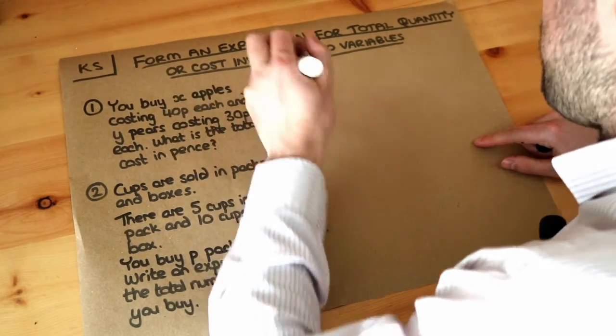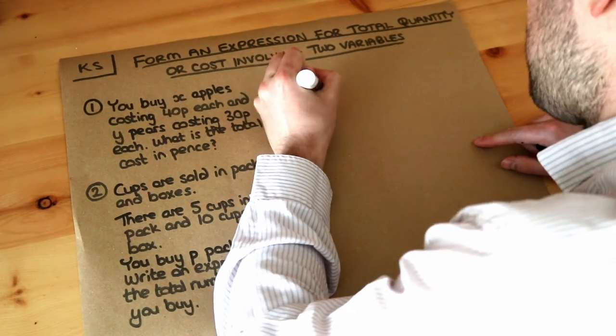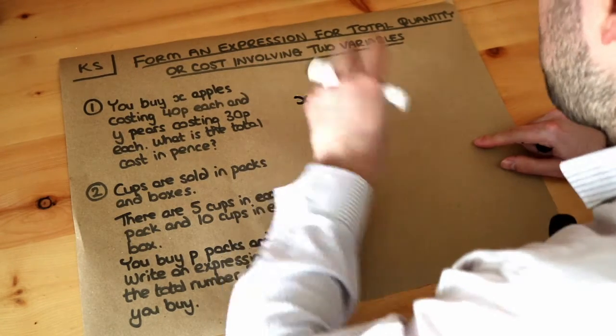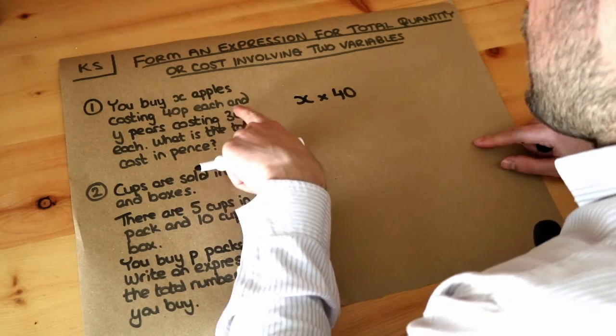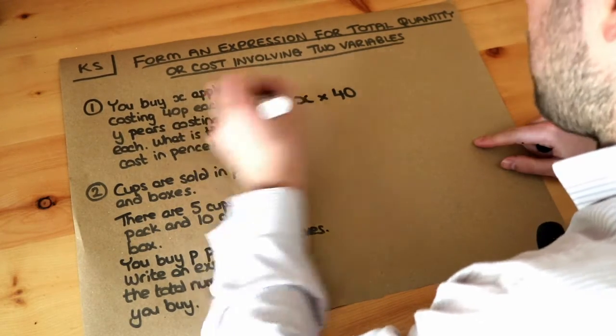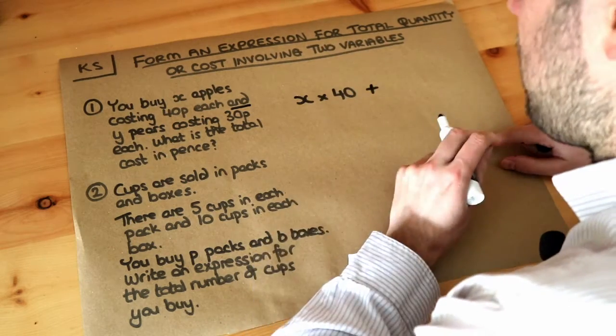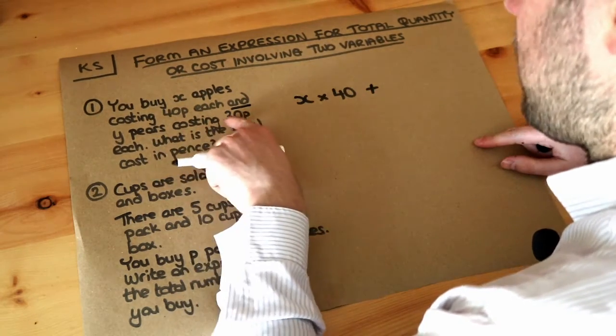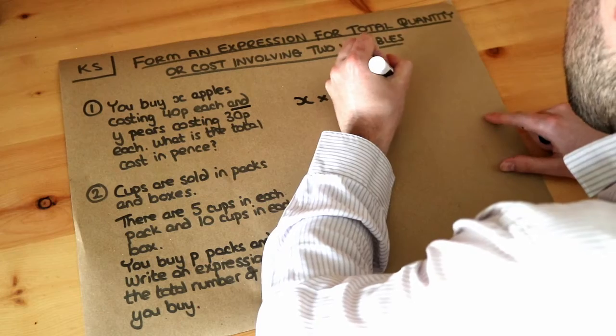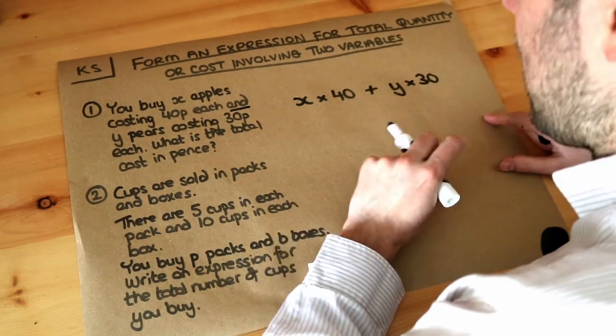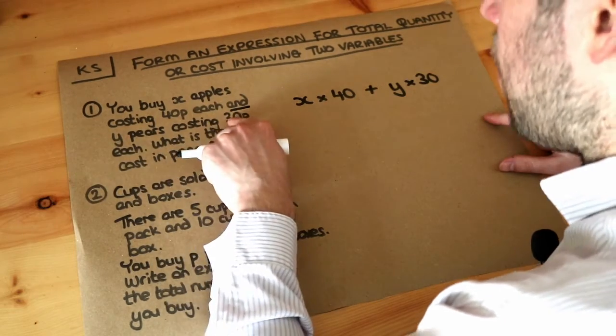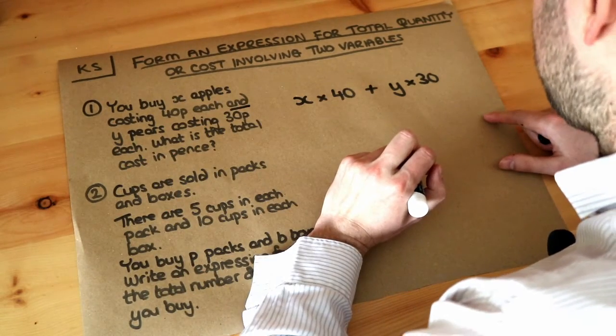So we've got x times 40, so x times 40p, and generally we don't put units within an algebraic expression. Then we've also got, and so we're adding to the cost, y pairs costing 30p. So we've also got y things each costing 30, and to find the total cost of the pairs we do the number of pairs multiply the cost, which would give us the total cost of the pairs.